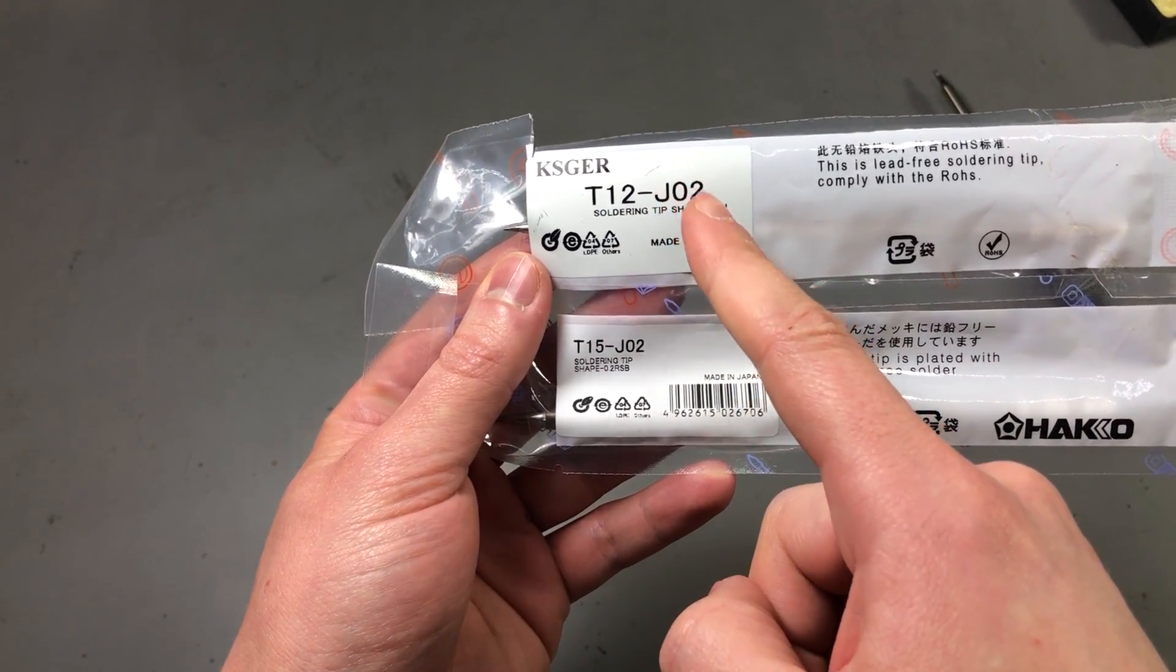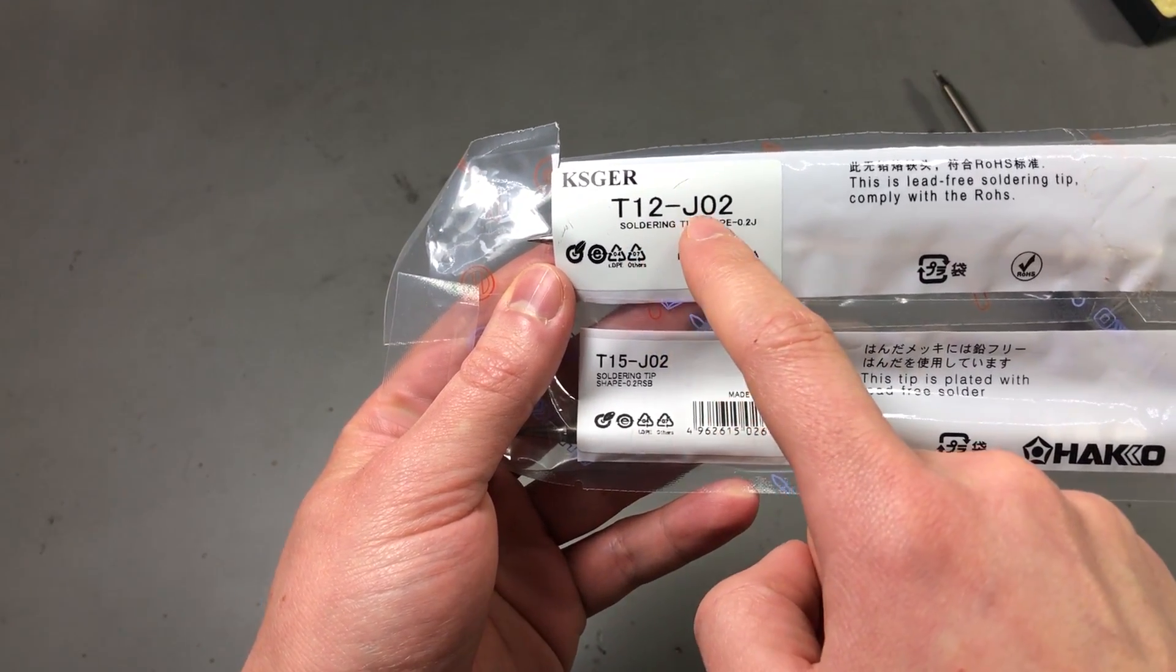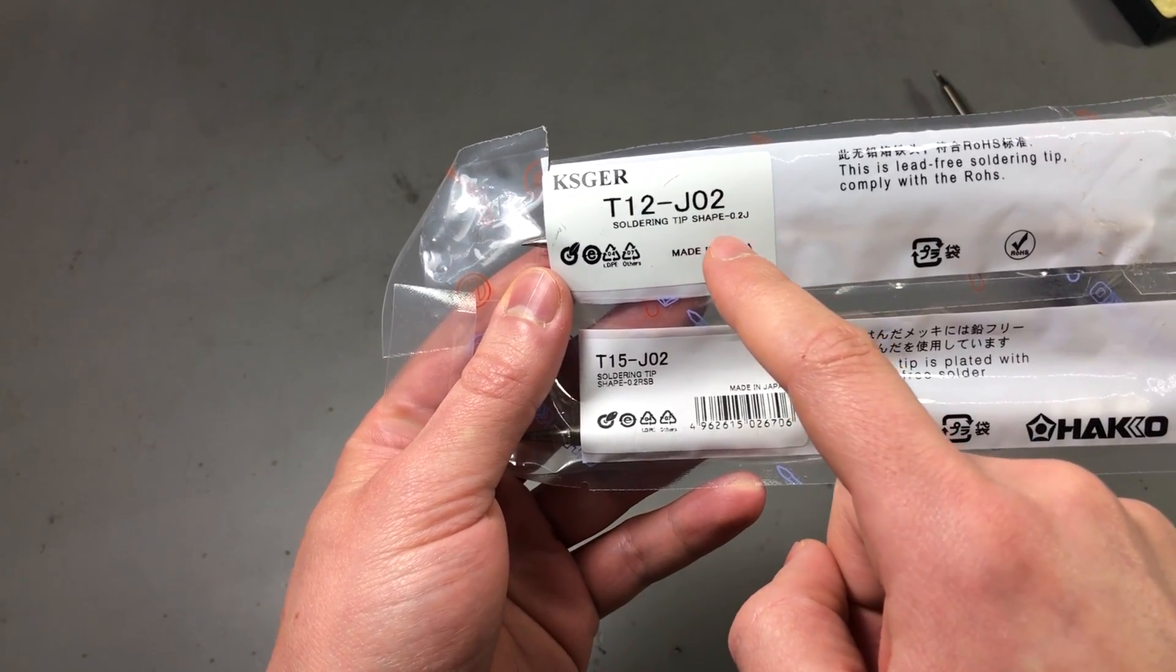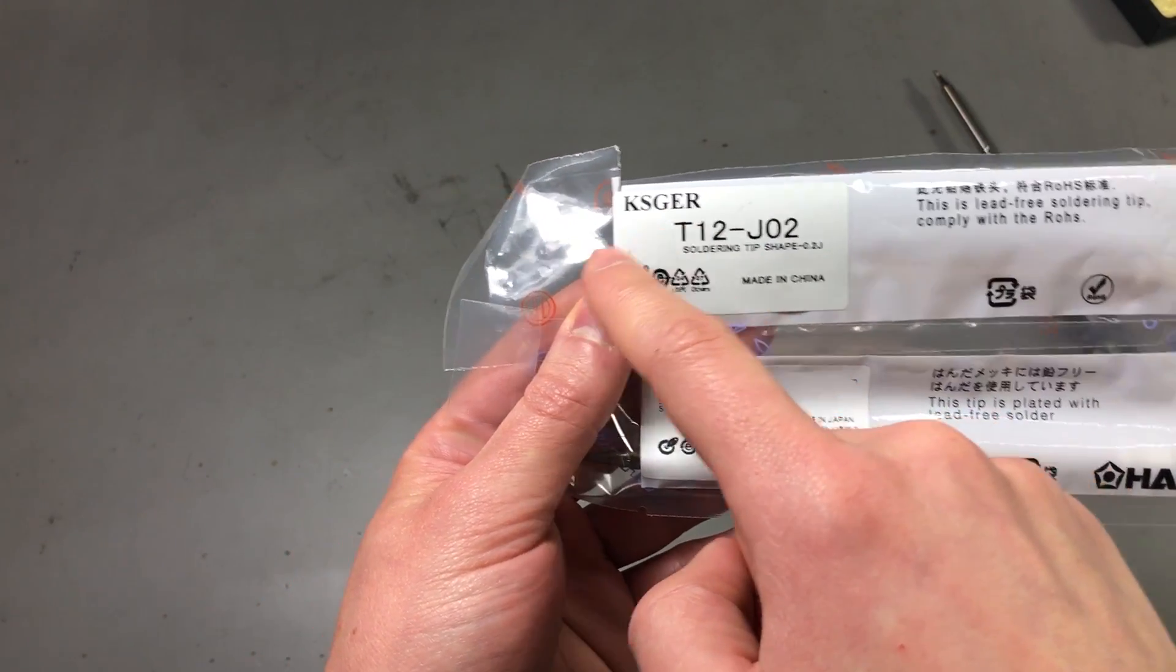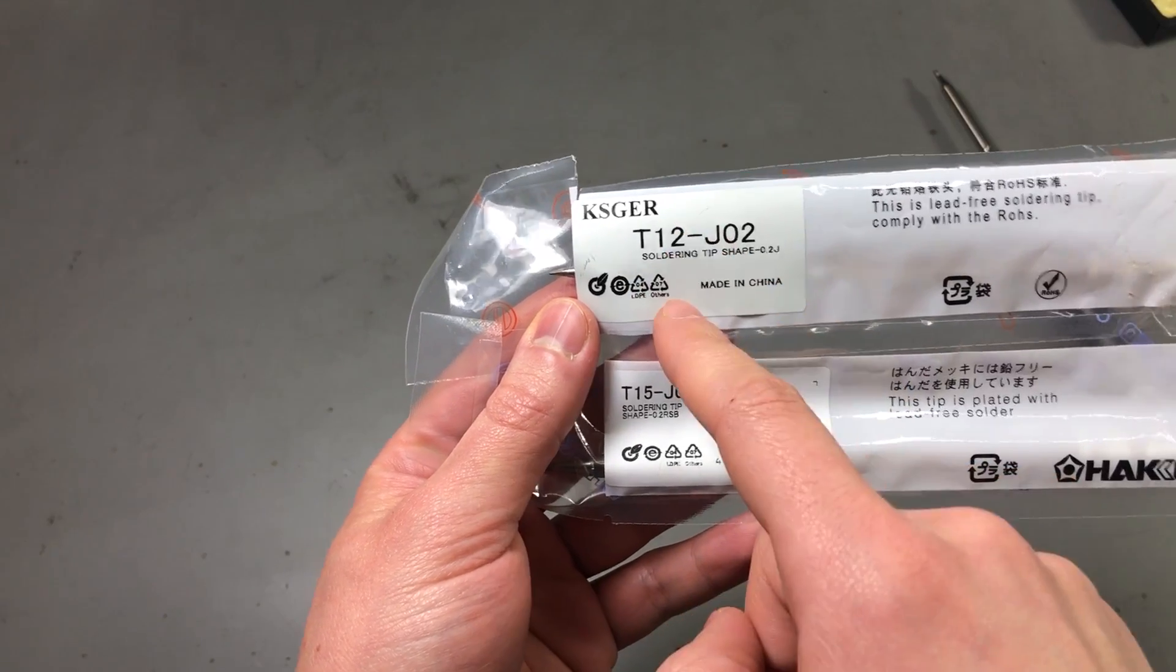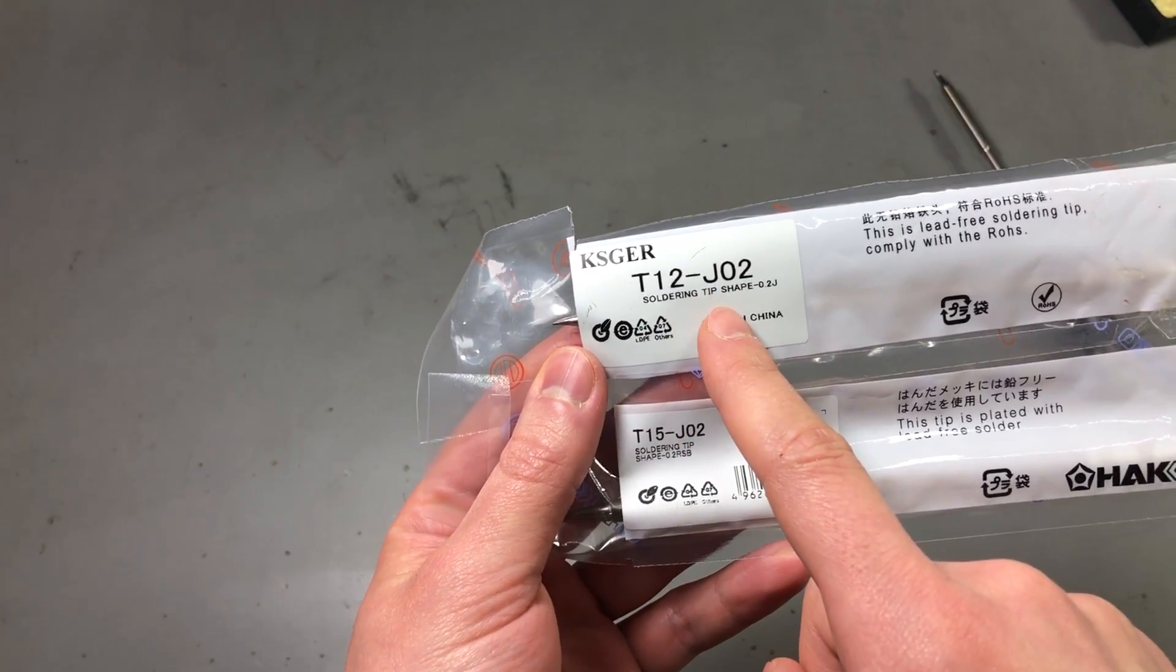And this is our replacement tip, it's the same style, the J02 tip, but it's a branded KSGR and I got it from AliExpress for under $4 with free shipping.